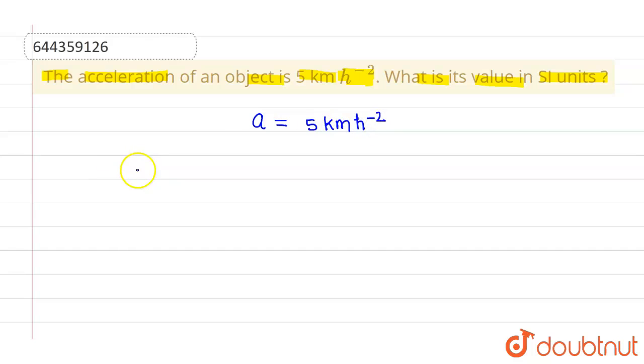And we know that in SI system of units, length is measured in meters. We can see that in SI units, length is measured in meters. And time is measured in seconds. Time is measured in seconds in SI unit.